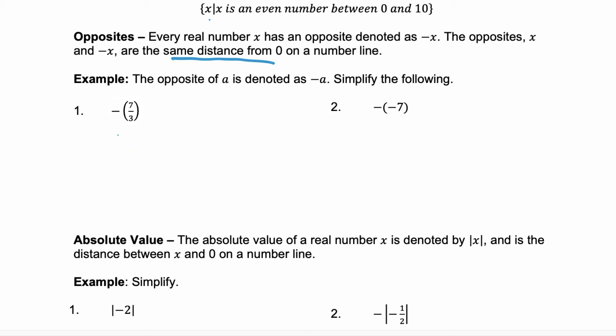In example one we're told the opposite of 7 thirds. Well 7 thirds is positive so the opposite is negative 7 thirds. In example two we have the opposite of negative 7 and the opposite of a negative is a positive. So the simplification here is 7.